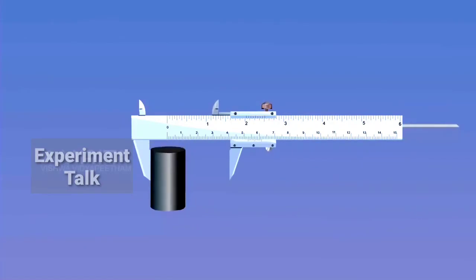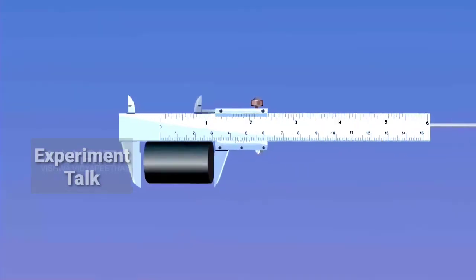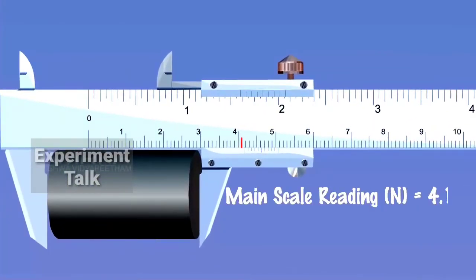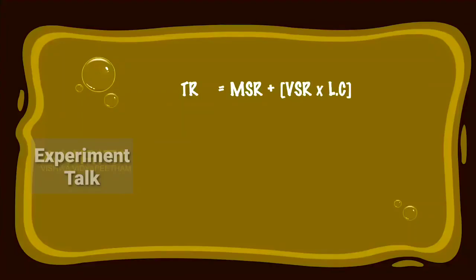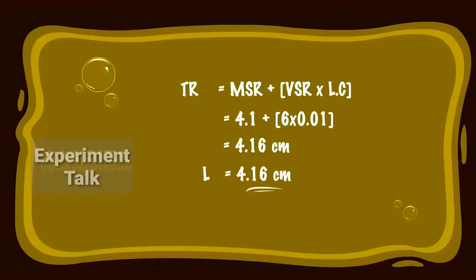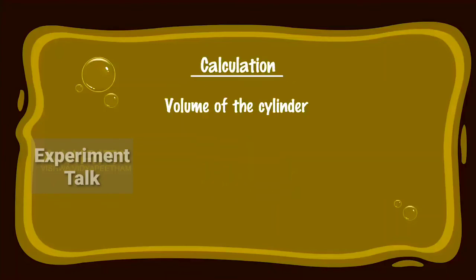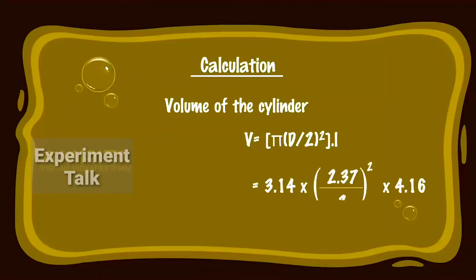Now, place the cylinder length-wise in between the outer measuring jaws of the Vernier Calipers and note its MSR and VSR readings. Calculation: TR is equal to MSR plus VSR into least count, that is equal to 4.1 plus 6 into 0.01, which is equal to 4.16 cm. That is L is equal to 4.16 cm. Volume of the cylinder V is equal to π × (D/2)² × L, that is equal to 3.14 × (2.37/2)² × 4.16, which is equal to 18.343 cm³.